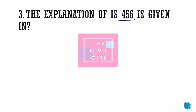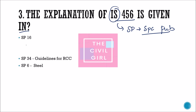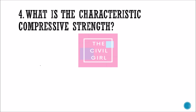Next question: the explanation of IS 456 is given where? IS stands for Indian Standards; there is another type called SP (Special Publications). For IS 456, the explanation is given in SP 16 and SP 34, which gives guidelines for RCC. SP 60 gives explanation for both RCC and PCC. Another publication to keep in mind is SP 6, which is for steel design.